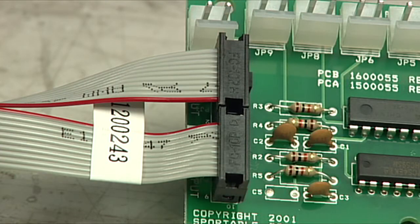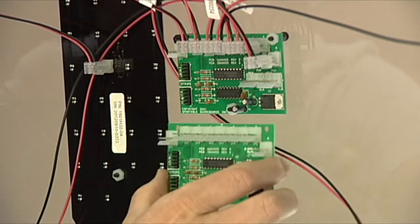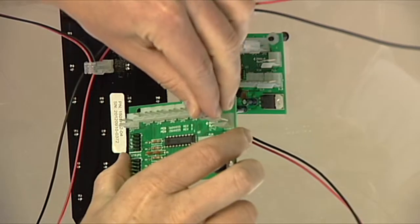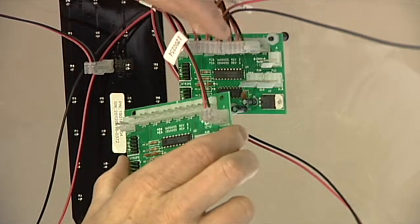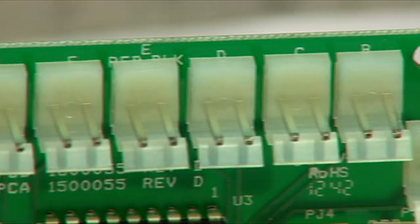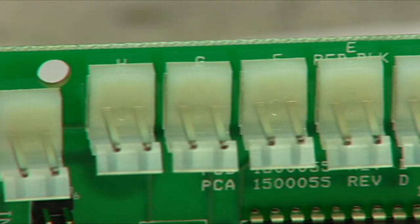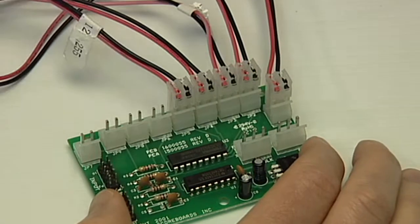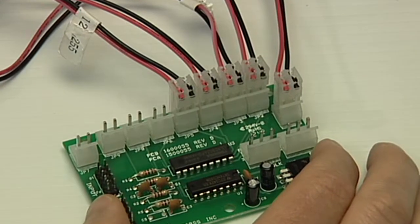When you are replacing the vane driver, you may find it easiest to remove each cable from the old driver and place them in the same location on the new driver. The vane driver board also has labels for every vane lettered A through I. Be sure each vane is connected to the correct letter on the driver board.